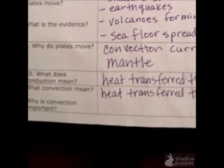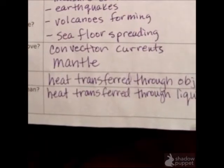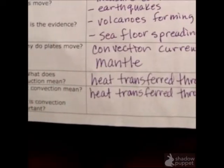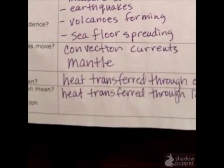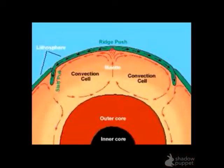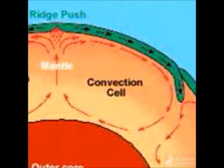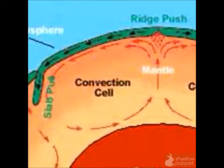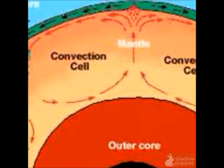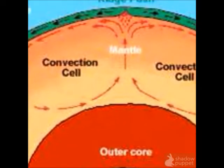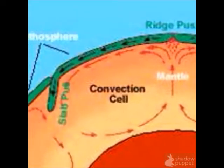Number nine: why do the plates move? The convection currents cause them to move, and that happens in the mantle. Here's a diagram showing the convection currents in the mantle — you can see it's moving clockwise. The convection currents underneath in the mantle cause the movement of the plates up above.